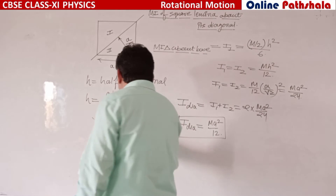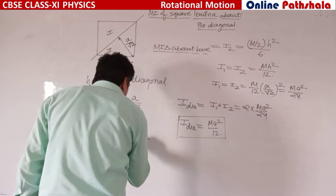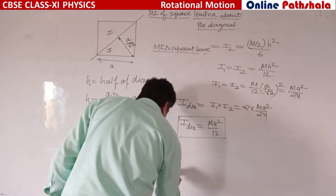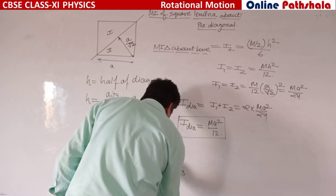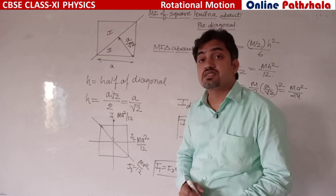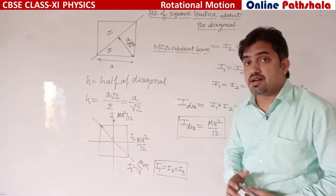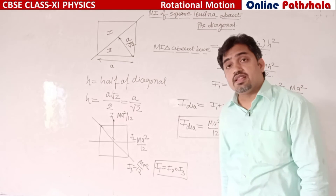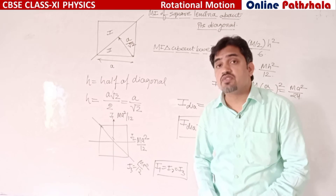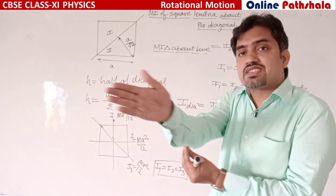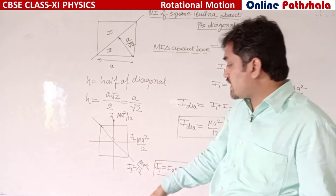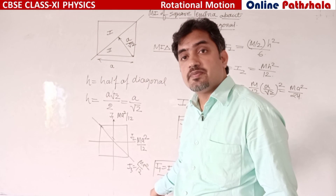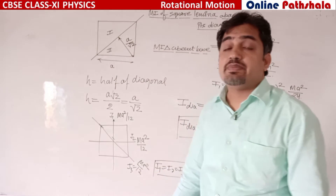Let us consider I1, I2, and I3. So I1 = I2 = I3. This is a very interesting concept and may be asked in JEE or NEET exams. If you are changing the axis of rotation — horizontal, vertical, or diagonal — the moment of inertia will be the same for a square lamina. Thank you very much.